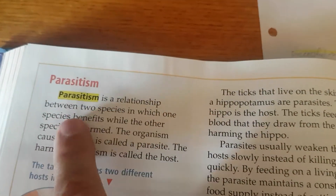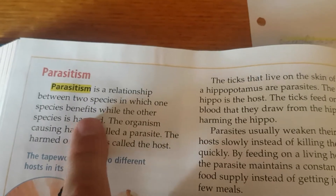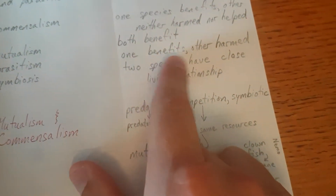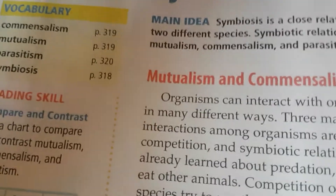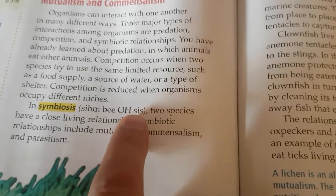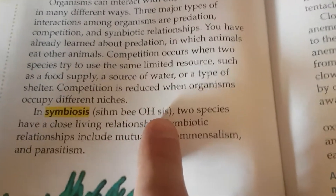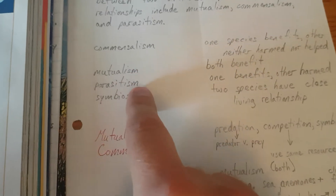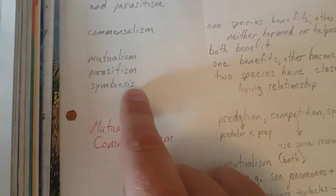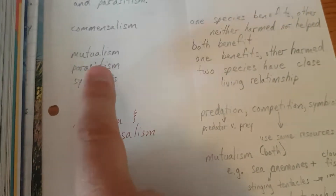Parasitism, page 320. Parasitism is a relationship between two species in which one species benefits while the other species is harmed. So, Parasitism: one benefits, other harmed. Symbiosis — in symbiosis, you can also say symbiosis, two species have a close living relationship. So, commensalism, mutualism, and parasitism are all types of symbiosis. All three of those are within the umbrella of symbiosis.